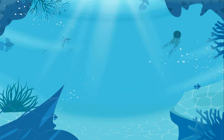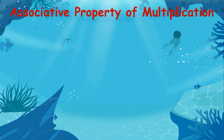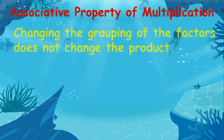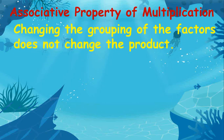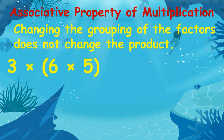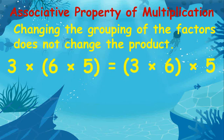The associative property of multiplication states that changing the grouping of the factors does not change the product. In 3 times (6 times 5), where 5 and 6 are grouped, is equal to (3 times 6) times 5, where 3 and 6 are grouped — both are equal to 90.